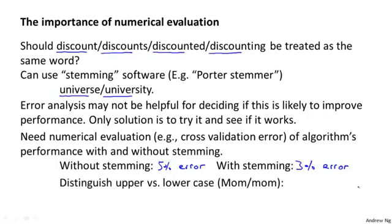As one more quick example, let's say you're also trying to decide whether or not to distinguish between upper versus lowercase — is the word 'Mom' with uppercase M versus lowercase M the same word or different words, the same feature or different features? Once again, with a way to evaluate your algorithm numerically, if you try this out and find that not distinguishing upper and lowercase gives 3.2% error, you find that this does worse than using stemming alone, and so this lets you very quickly decide whether to distinguish upper and lowercase or not.